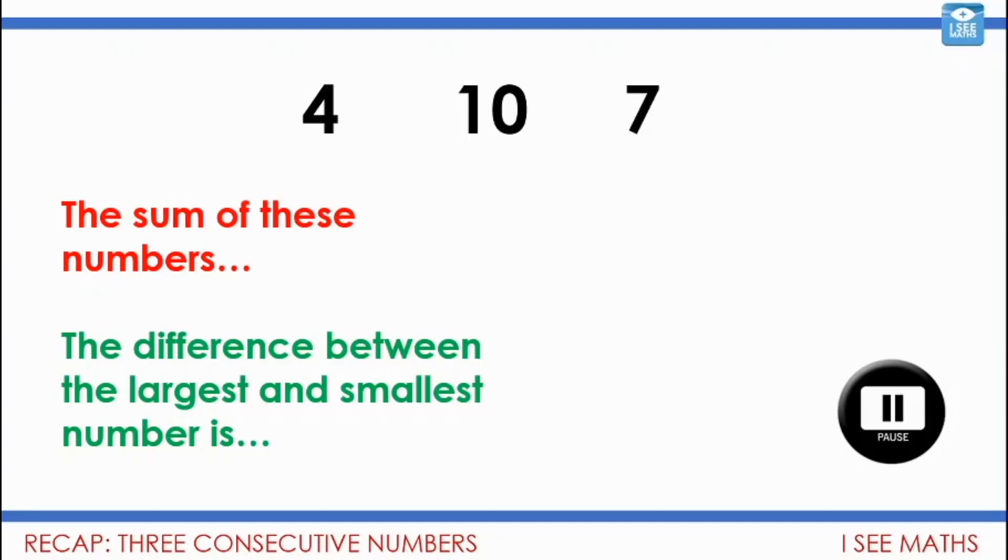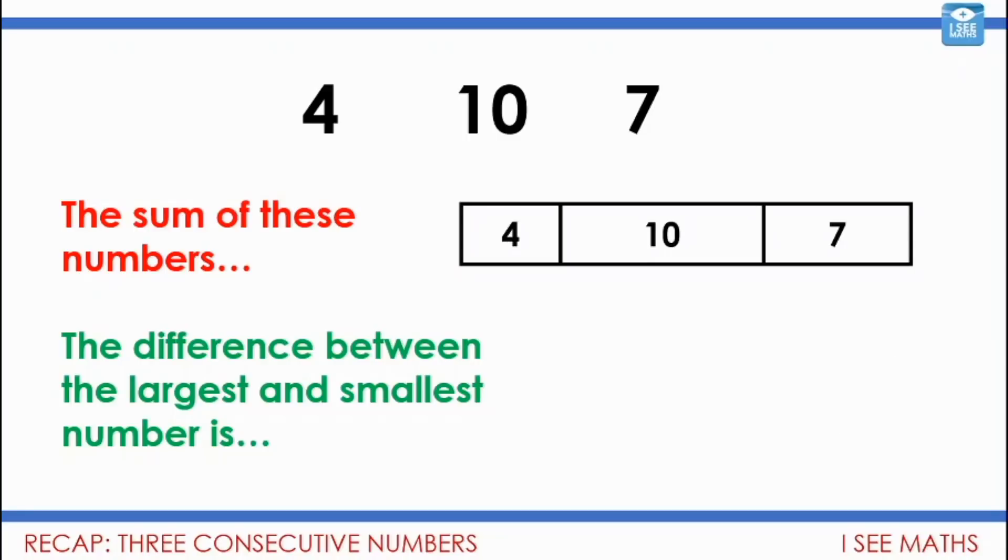Let us have a look. The sum of those numbers, when we say the sum of those numbers we mean those numbers added together. So four and ten and seven, I would probably add the four and the seven first, make eleven, and then the ten, eleven and ten is twenty-one. And then of course the largest number there is ten, the smallest number is four. I could use a number bond fact there to know that four and six is ten, and so the difference is six.